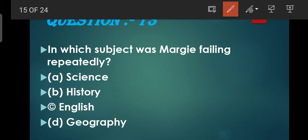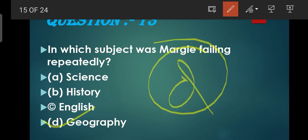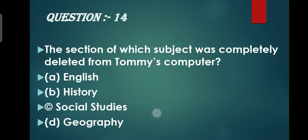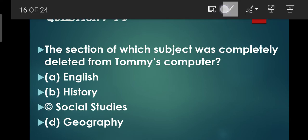Question number 13: In which subject was Margie failing rapidly? Jo Margie hai, baar baar kaun se subject mein fail hoti ja rahi thi? Abhi abhi humne baat ki - jo uski geography thi, uska level bahut zyada high ho gaya tha, jis ki wajah se woh fail hoti ja rahi thi. So D is the correct option.